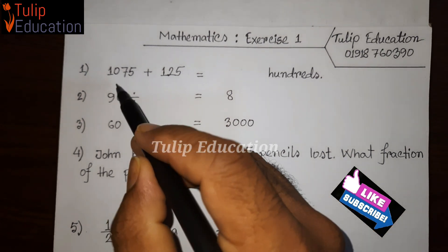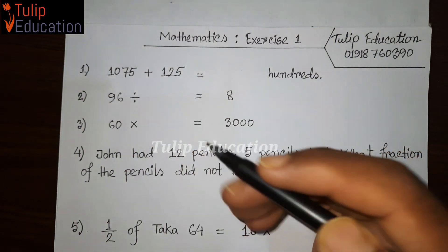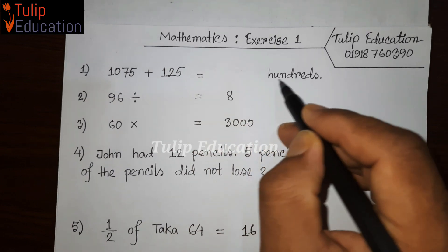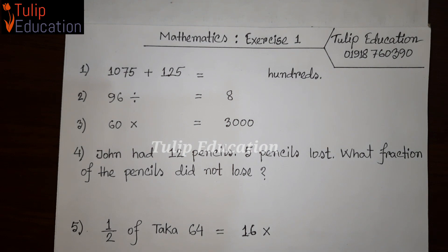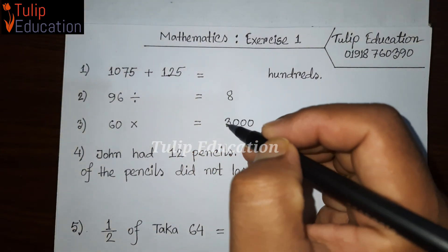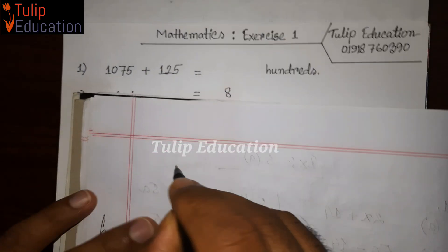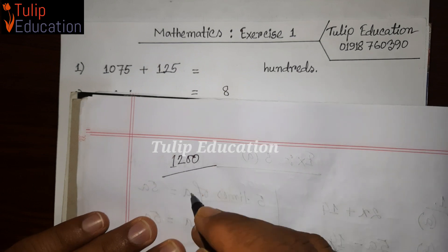Today we are going to add 1075 plus 125. We add 1075 plus 125 and we get 1200. That means we are going to get 12 hundred.